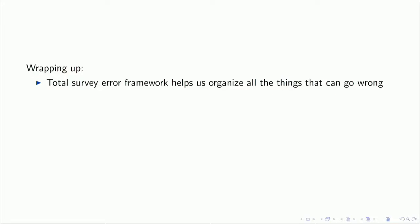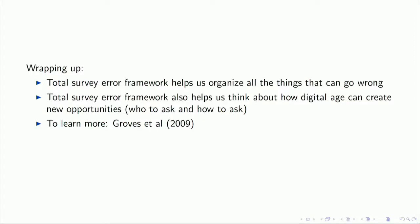Wrapping up, the Total Survey Error Framework helps us organize all the things that can go wrong. It's very useful when you're designing a survey, because you want to, as much as possible, minimize those problems. It's very useful when you're thinking about someone else's survey. Someone presents you some results that come from a survey. One of the first things I do is I think about the Total Survey Error Framework, and I think about the representation and how that was handled, and I think about the measurement and how that was handled. It's very useful for yourself when you're analyzing your own data, to try to be honest about the errors that you have in both of these kinds of errors, and report them, and be as clear as possible about how those could potentially affect your results. To learn more, I recommend this book by Bob Groves et al. It's a really good introduction to survey research. It includes issues related to representation and measurement.